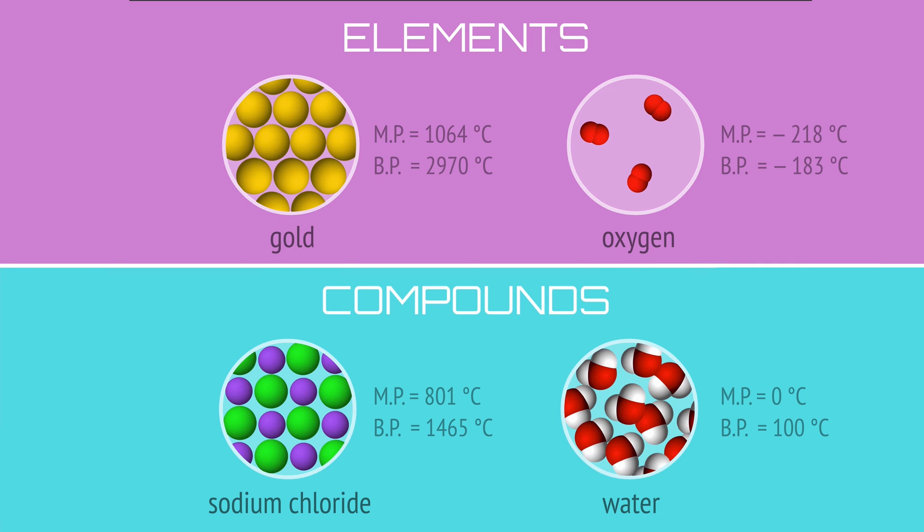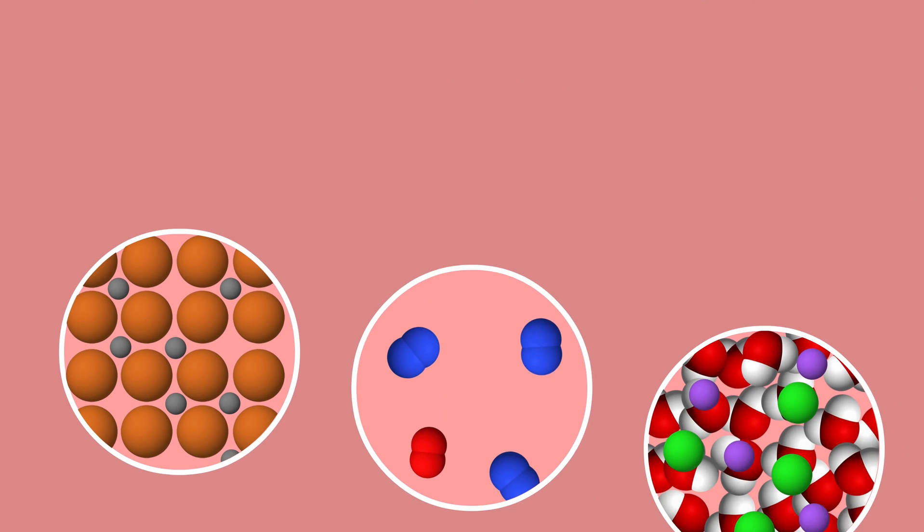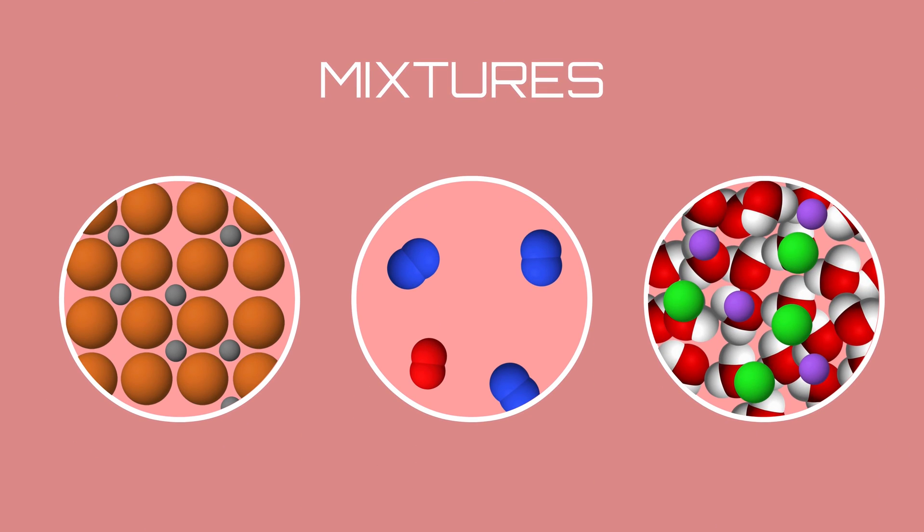We start with a study of pure substances because most matter exists as a mixture of these substances. We define a mixture as a blend of two or more pure substances that are not chemically combined.